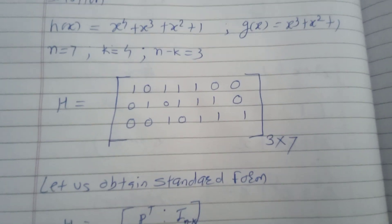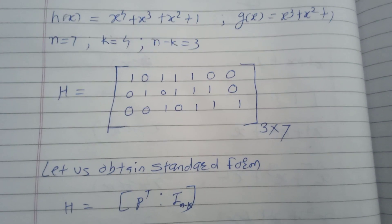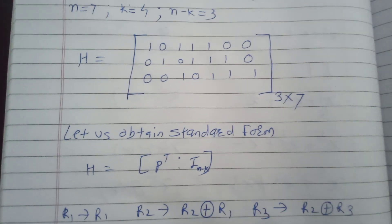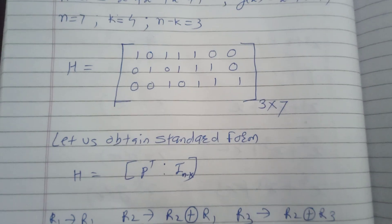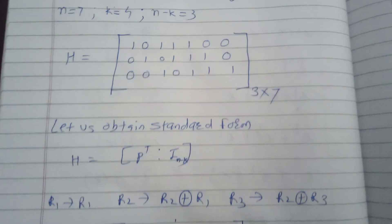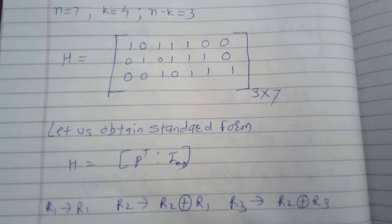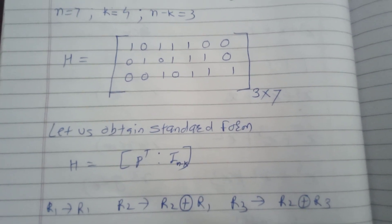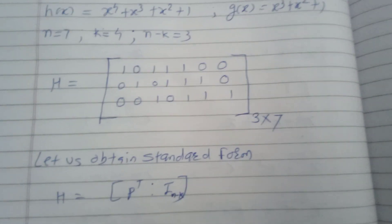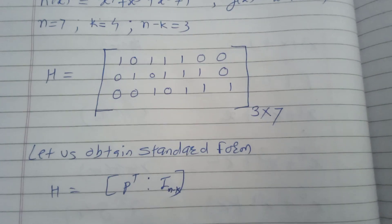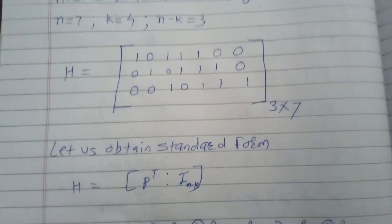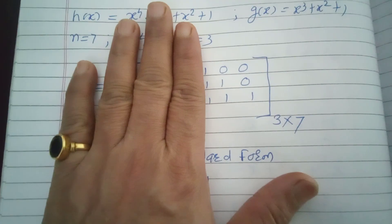The resulting matrix H is not yet in standard form. The standard form requires H = [P^T | I_{n-k}], meaning the parity bits portion comes first, followed by an identity matrix of dimension n−k. In this case, n−k = 3, so we need to produce a 3×3 identity matrix on the right side.